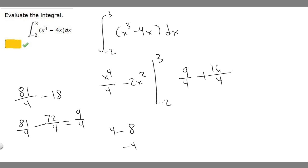So 9 over 4 plus 16 over 4 is our answer. If we add them together, we get 25 over 4. So that's how you evaluate this integral.